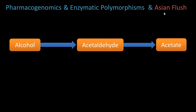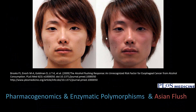The Asian flush is not actually a result of alcohol itself, but it's a result of alcohol metabolism. Alcohol is eventually metabolized into carbon dioxide and water, but on its way it forms a toxic intermediate called acetaldehyde. This bad boy is toxic, and acetaldehyde is then eventually broken down into acetate. But if acetaldehyde builds up and levels increase, this can cause the Asian flush.